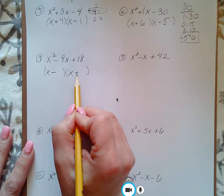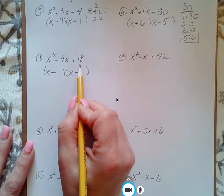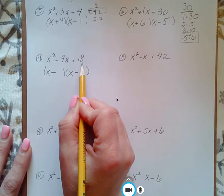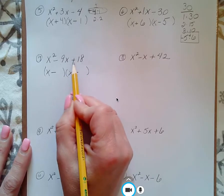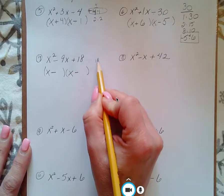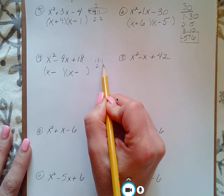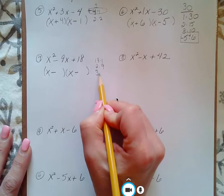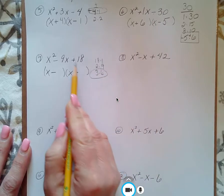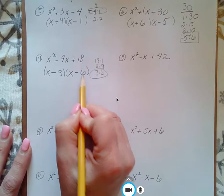So now we're multiplying to get 18, adding, still adding, to get 9. So that's 18 and 1, 2 and 9, 3 and 6. There it is. That's how I can add to get 9, minus 3, minus 6.